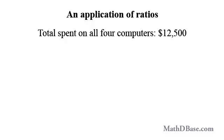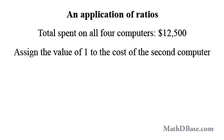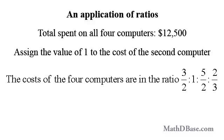If the ratio between quantities is not given, assign the value of 1 to one of the quantities, then calculate the ratios of the others based on the information given. An IT company bought four computers and spent a total of $12,500. The first computer cost one-and-a-half times as much as the second, the third cost two-and-a-half times as much as the second, and the fourth cost two-thirds as much as the second. Assigning the value of 1 to the cost of the second computer, the costs relate as 3/2 to 1 to 5/2 to 2/3.